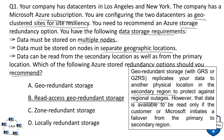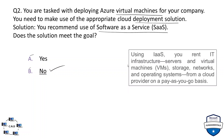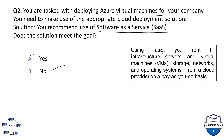Question number two: you are tasked with deploying Azure virtual machines for your company. You need to make use of the appropriate cloud deployment solution. The solution proposed is to recommend use of Software as a Service (SaaS). Does this solution meet the goal? The correct option is no. Using Infrastructure as a Service, you can rent IT infrastructure such as servers, virtual machines, storage, networks, and operating systems from a cloud provider on a pay-as-you-go basis. IaaS would be the right choice for deploying virtual machines.